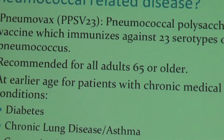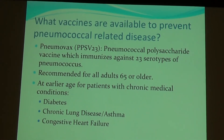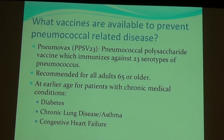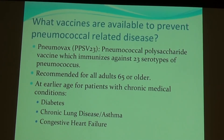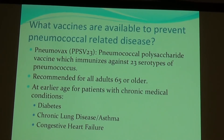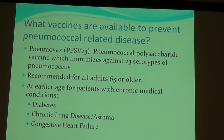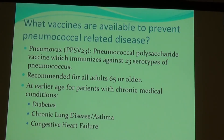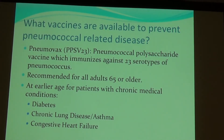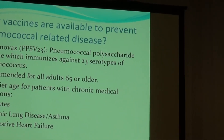So what vaccines are available to prevent pneumococcal-related disease? We have the Pneumovax, also called PPSV23 or pneumococcal polysaccharide vaccine, which immunizes against 23 serotypes of pneumococcus. It is recommended for all adults 65 years or older. We also give it at a younger age to patients with chronic medical conditions that predispose them to pneumococcal infection, including diabetes, chronic lung disease such as emphysema, bronchitis, asthma, or congestive heart failure.